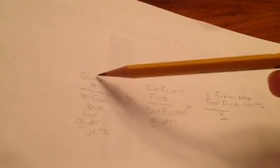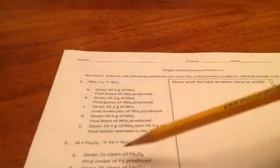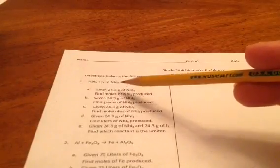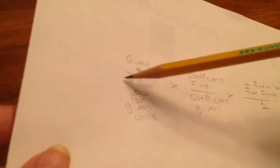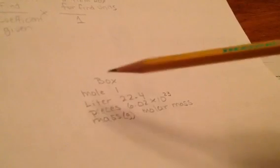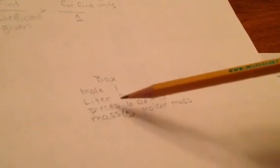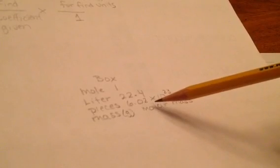The stoichiometry problem looks like this. It's the number that you've been given, and in this first problem that would be 24.3 grams. The number that you've been given, the number from the box for the given units. Remember, the box is for moles, it's 1, for liters, 22.4, for pieces, 6.02 times 10 to the 23rd. And for mass, it's calculating the molar mass.